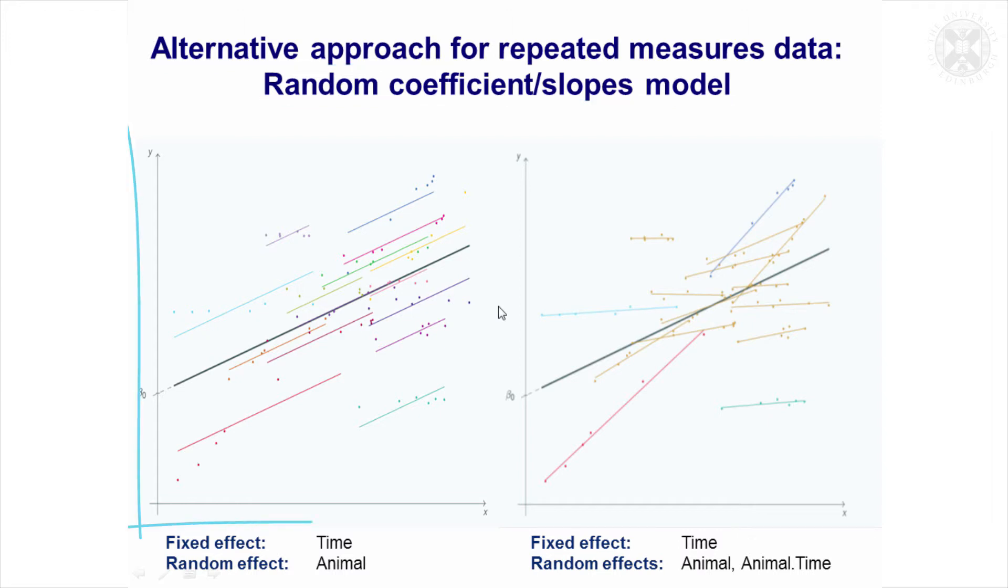If you imagine each of these colors represents maybe a different animal, you could fit this model. That would involve fitting a common slope - you'd fit the time effects as a fixed effect and the animal effect as random. You'd have a different intercept for each of the animals, which is why the different slopes are at different levels.